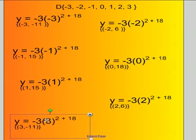Now the last number is 3. y = -3(3)² + 18. 3 squared is 9. 9 times -3 is -27. -27 + 18 = -11. So this one would be written as (3, -11).